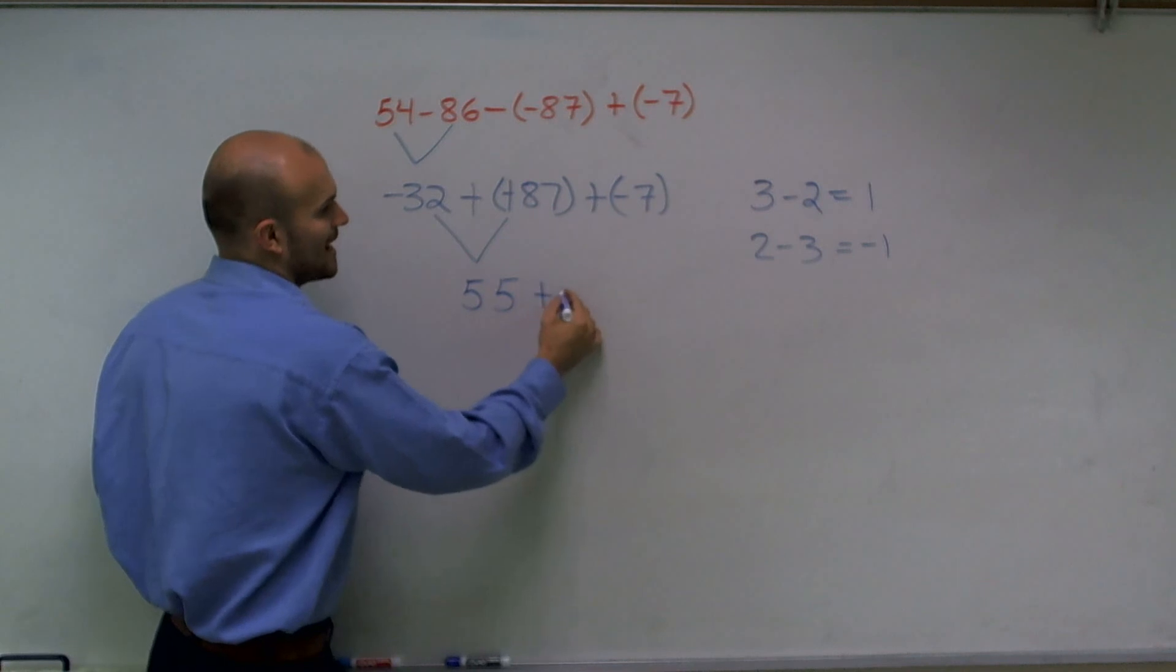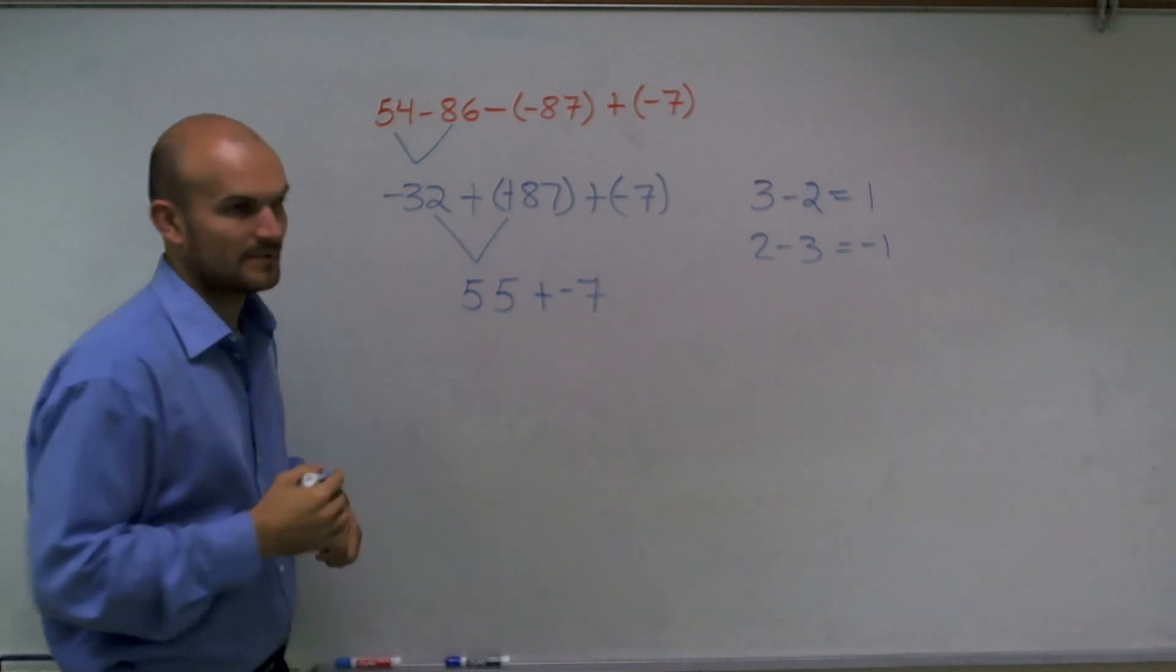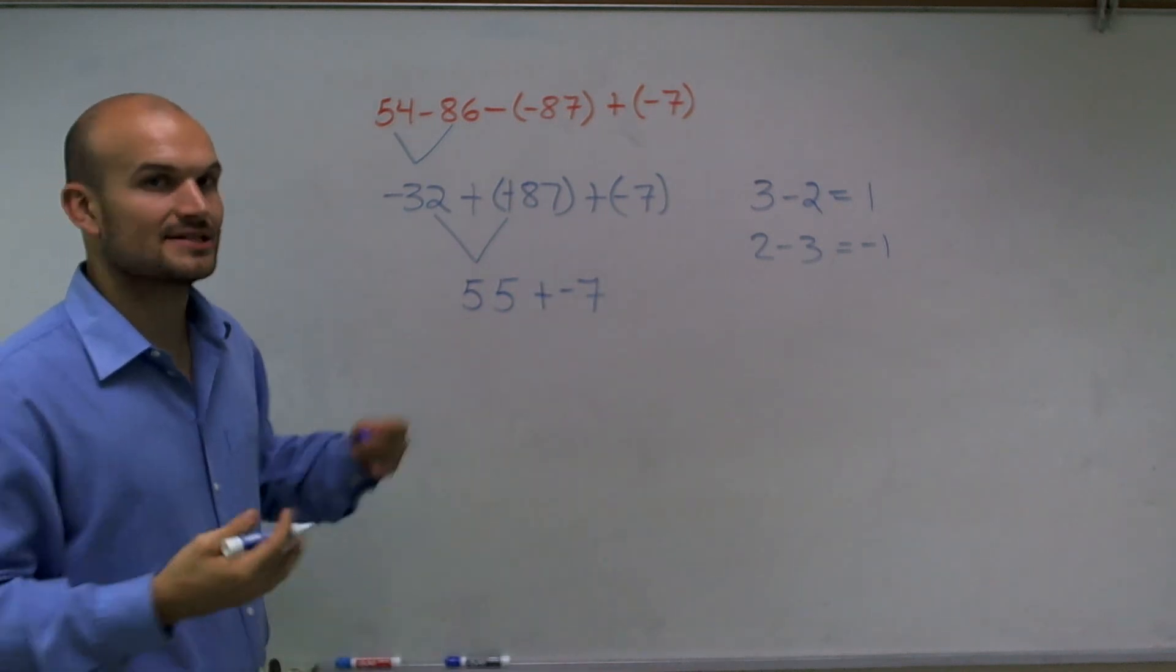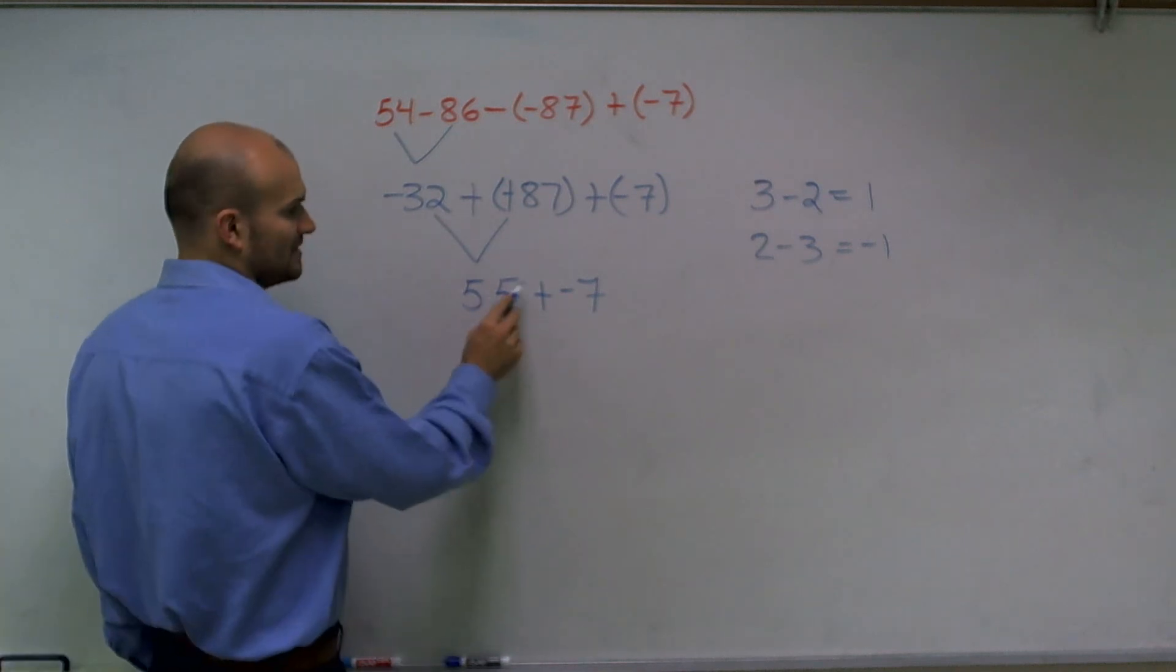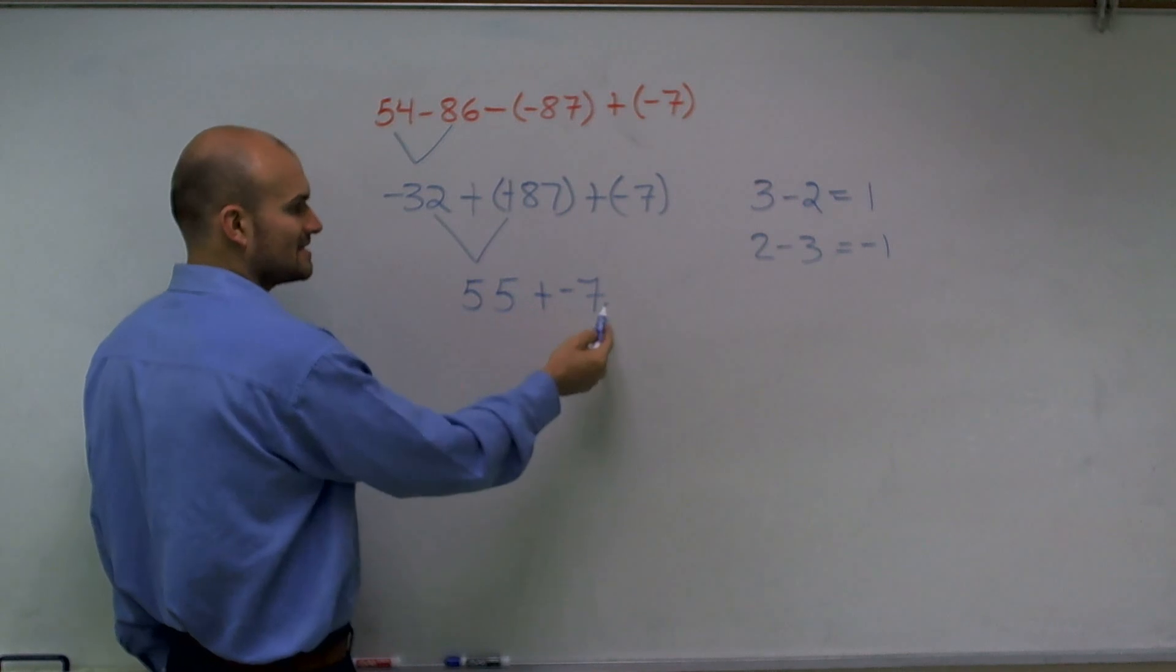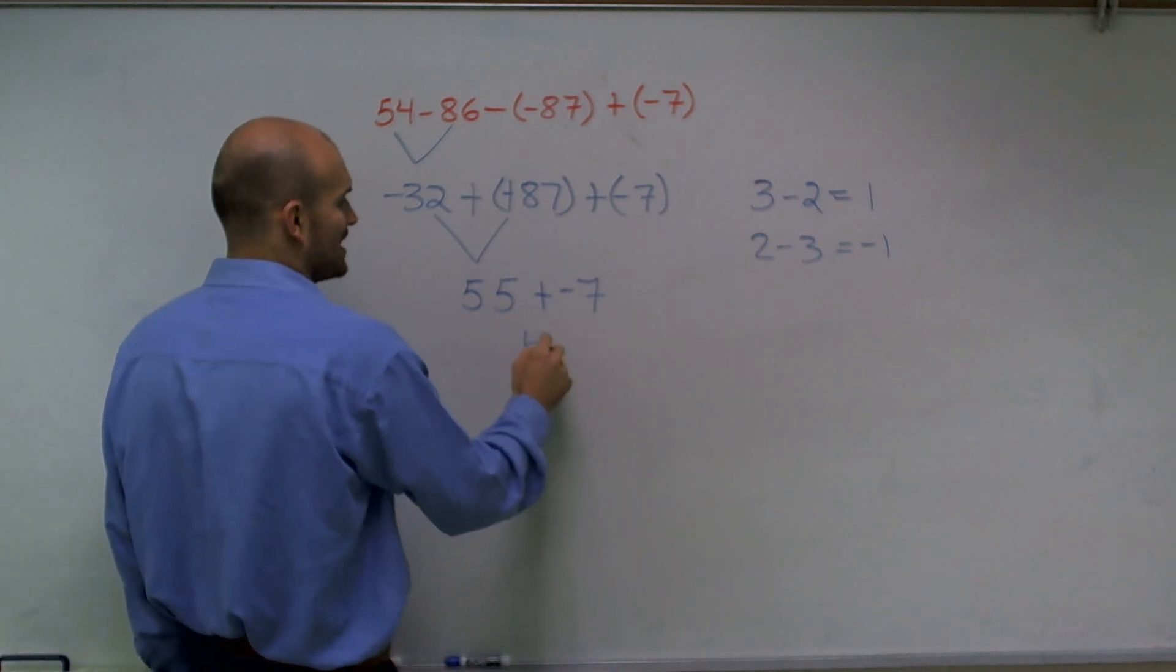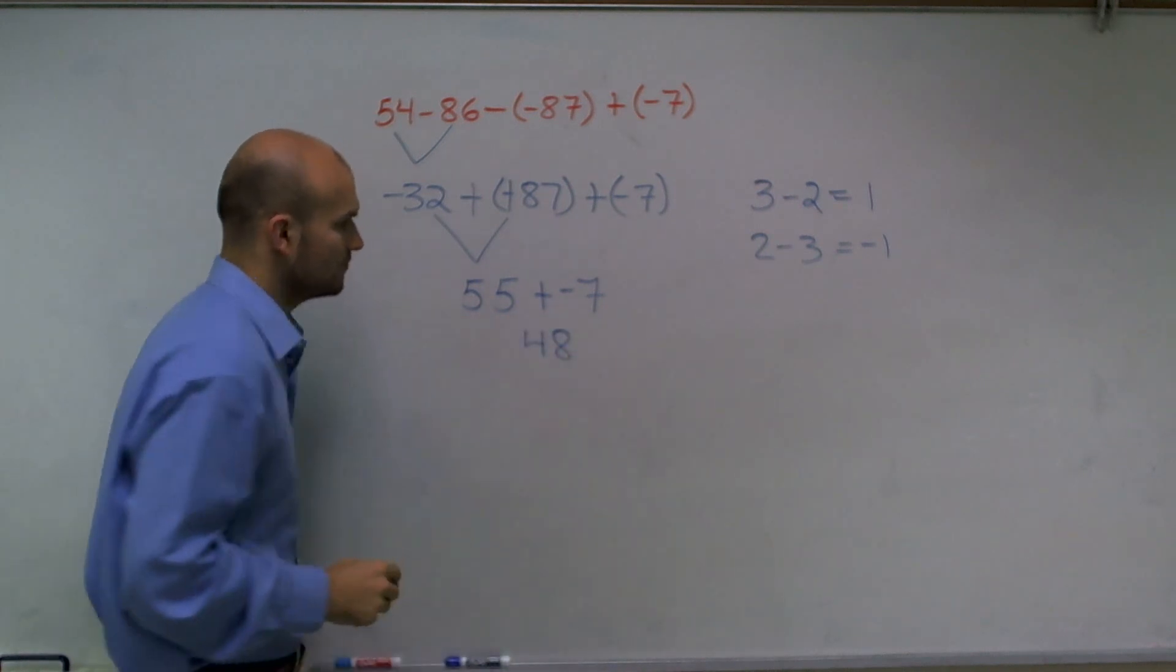Now, I'm going to add a negative 7. And adding a negative 7 is just equivalent to just subtracting a positive 7. So 55 plus negative 7 or 55 minus 7 is going to give us a positive 48.